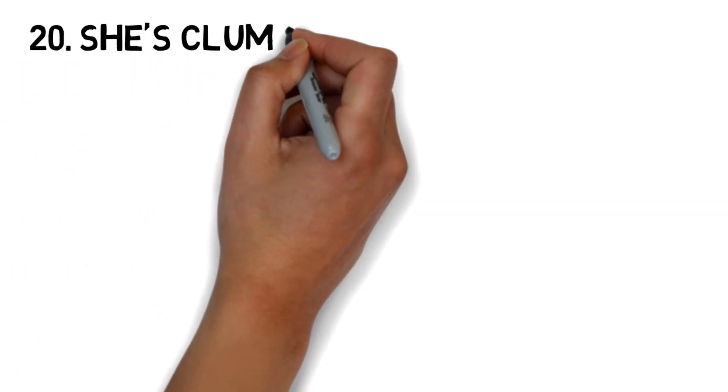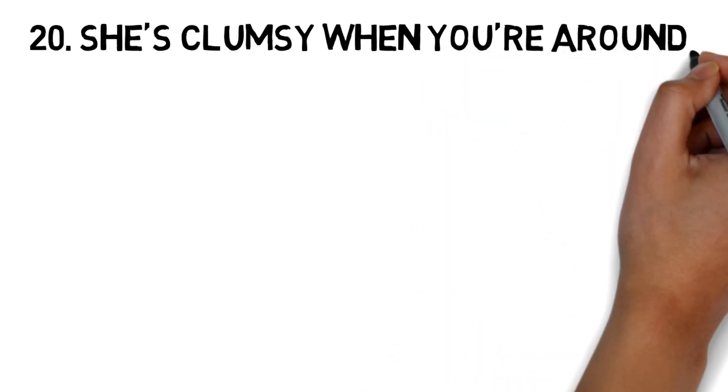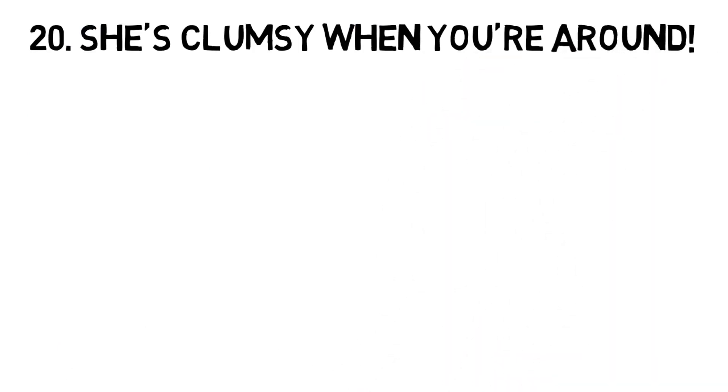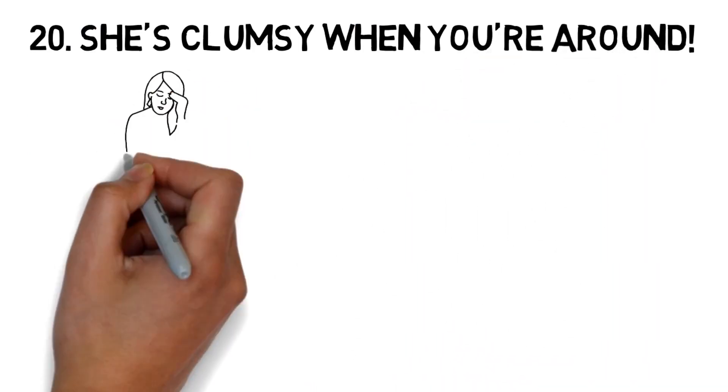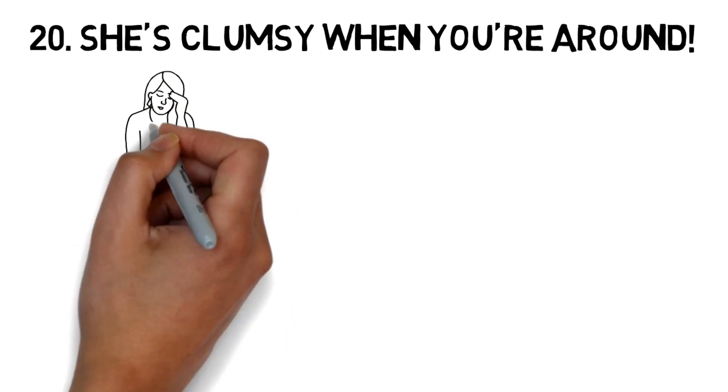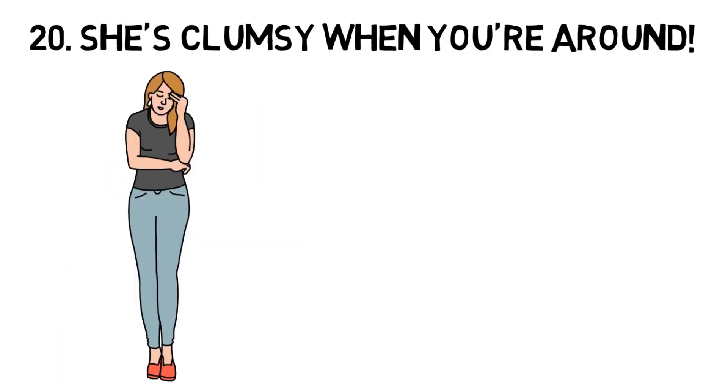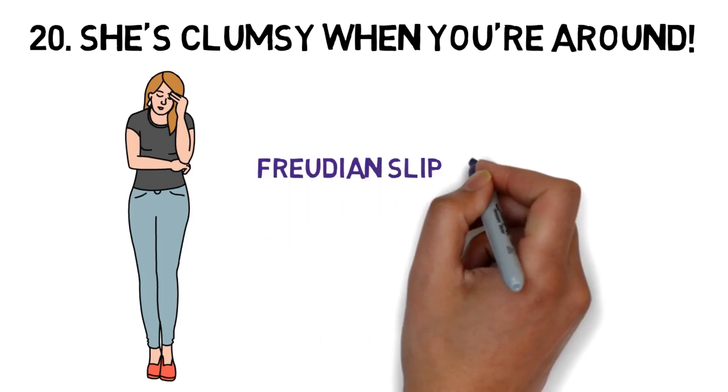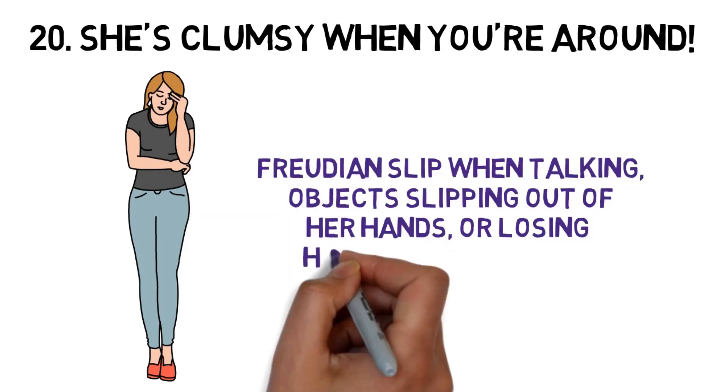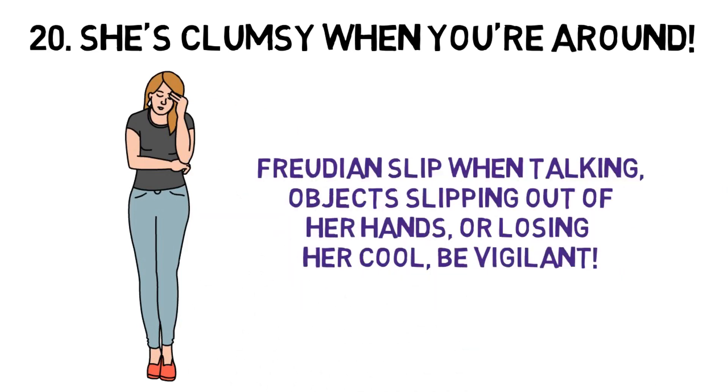20. She's clumsy when you're around. When a woman is in love, and even more so when she is afraid that her feelings will not be reciprocated, she will tend to be particularly clumsy in the presence of the man she is attracted to. Freudian slips when talking, objects slipping out of her hands, or losing her cool. Be vigilant.